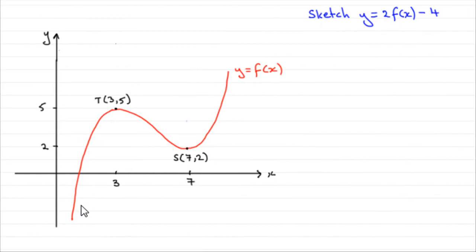Hi. Now, in this part of the question, we were given the curve y equals f of x, which I've sketched in, and the two turning points, T and S, with coordinates 3, 5 and 7, 2, respectively.